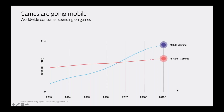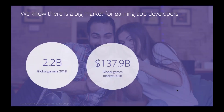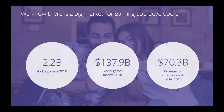First, I want to show you where gaming is headed. This graph shows where consumers are spending their money, and it's clear that mobile games are going global. Mobile phones are now the most popular video game consoles in the world. We know this is a big market for gaming app developers. In 2018 alone, there were 2.2 billion global gamers.